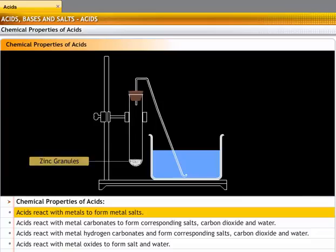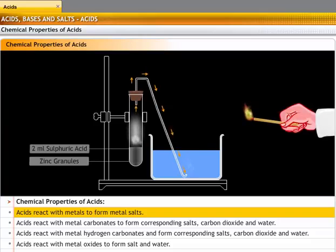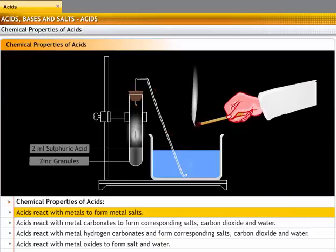Take a few granules of zinc in a test tube. Add 2 ml of sulfuric acid to it. You will find that a gas will be liberated. Bring a burning splinter close to the gas liberated. The splinter burns and a pop sound shows the presence of hydrogen.